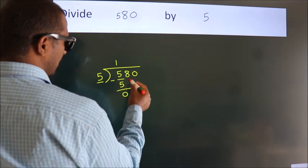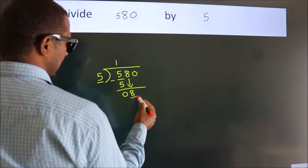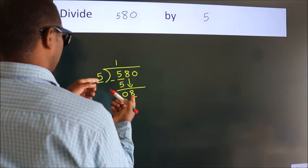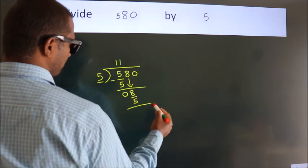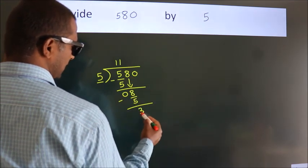After this, bring down the beside number, so 8 down, so 8. A number close to 8 in 5 table is 5 once, 5. Now, we subtract, we get 3.